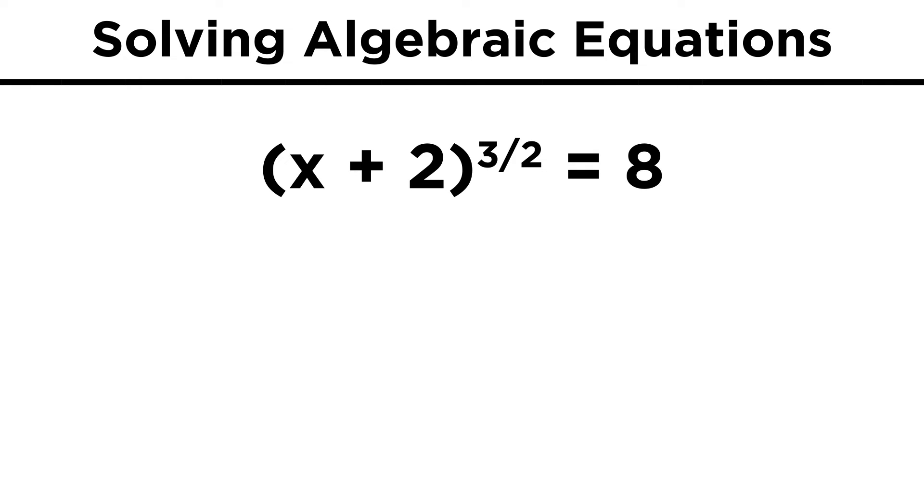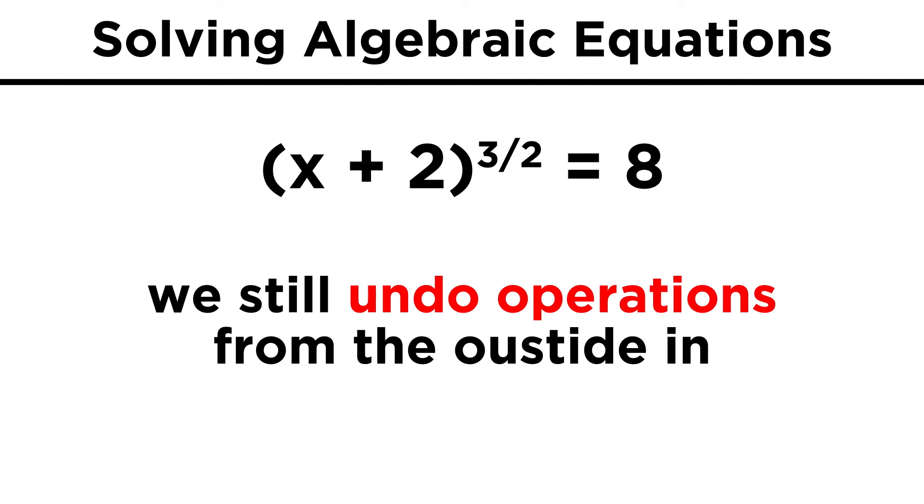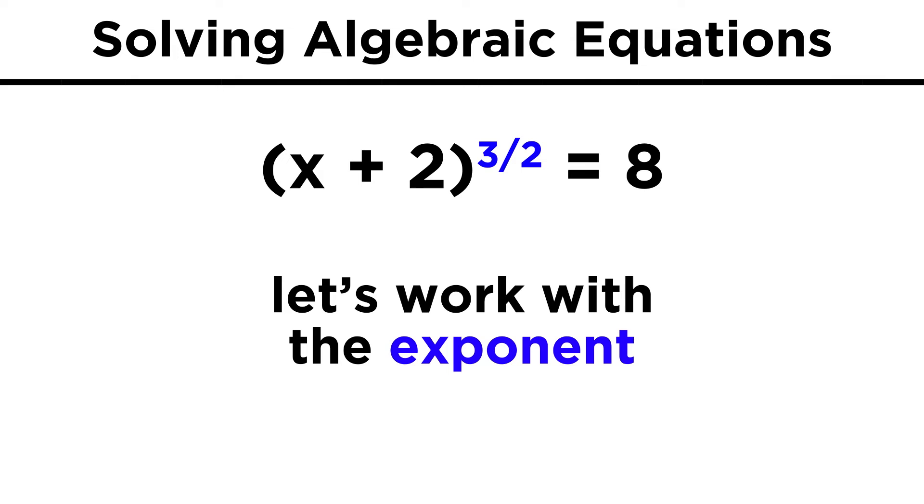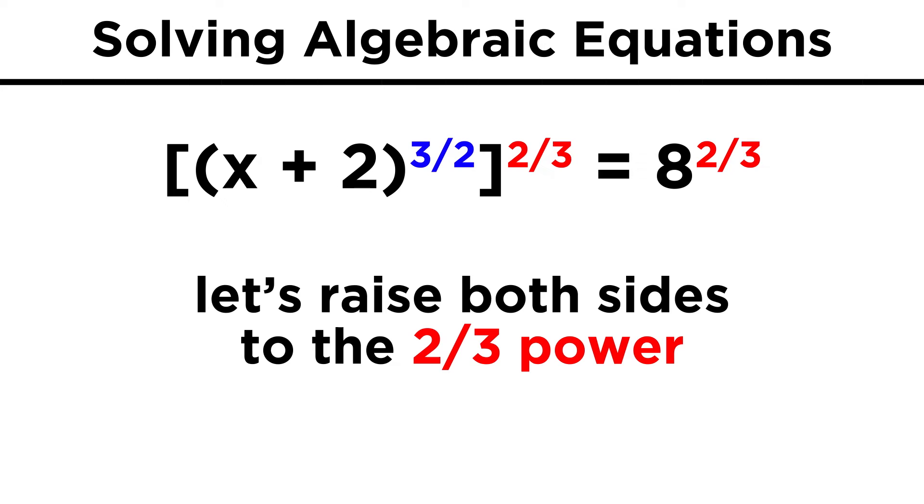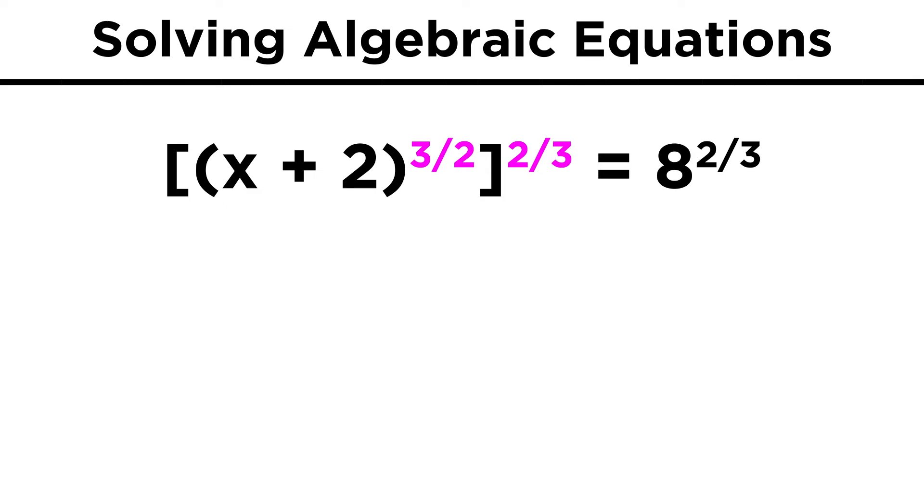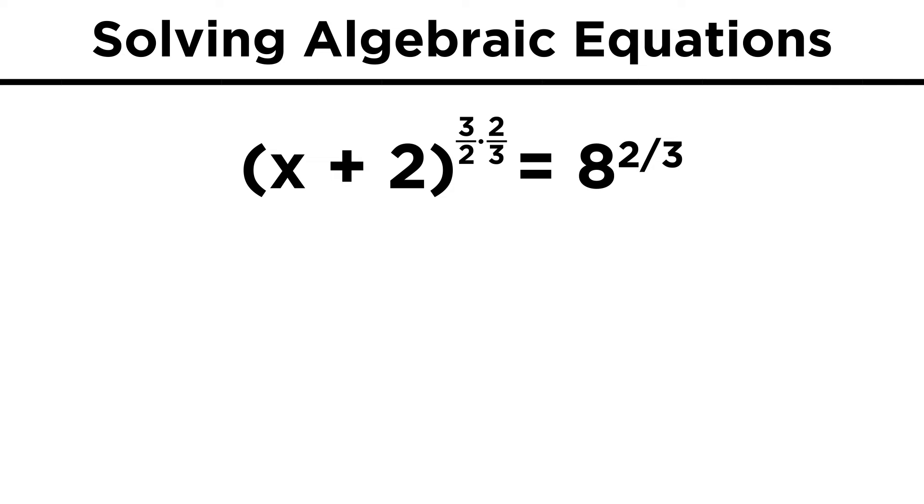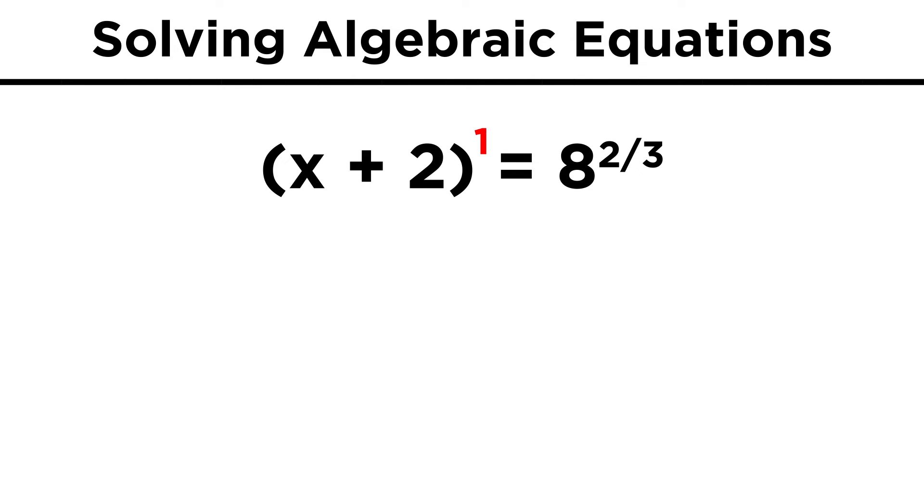How about something a little trickier? The quantity x plus two to the three-halves power equals eight. We still just go from the outside in, undoing every operation that acts on the variable we are solving for, one at a time. First, we have to get rid of the exponent. How do we get rid of the three-halves? The fastest way to do it would be to raise both sides to the two-thirds power. If we raise this term to the two-thirds power, we are raising it to the three-halves times two-thirds power, and if we do this, everything cancels, and we just get one as the exponent.